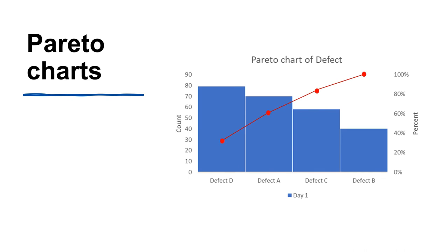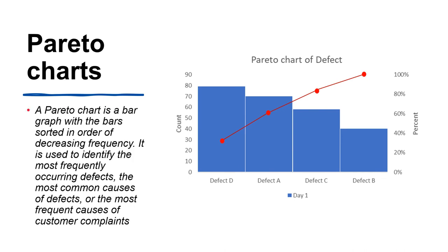A Pareto chart is a bar chart with the bars sorted in order of decreasing frequency. It is used to identify the most frequently occurring defects, the most common causes of defects, or the most frequent causes of customer complaints. Pareto charts are particularly effective for data that classify complaints or defects.